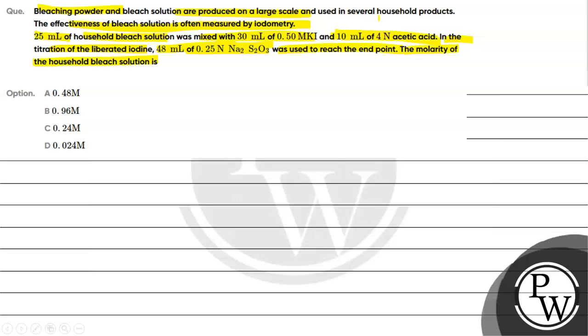In the titration of the liberated iodine, 48 ml of 0.25 normal Na2S2O3 was used to reach the end point. The molarity of the household bleach solution is: option A 0.48 molar, option B 0.96 molar, option C 0.24 molar, option D 0.024 molar.